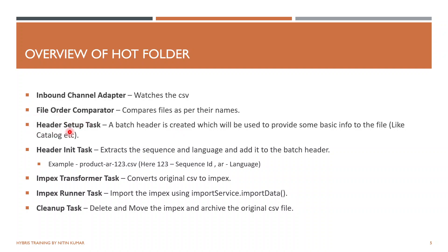In the header setup task we set up a header providing basic information about the file, such as the catalog or any macros we want to provide. Next is the header init task, which extracts the sequence and the language of the file and adds it to the batch header. For example, if the file is named product-ar-123, the sequence will be 123 and 'ar' will be the language.